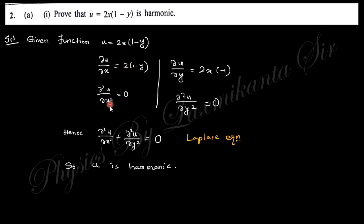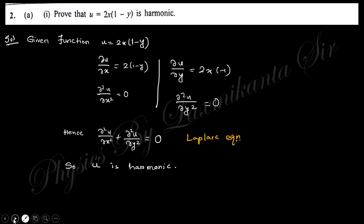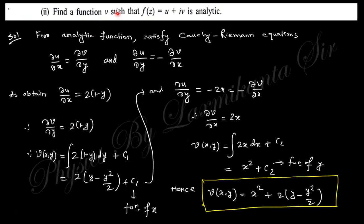Taking the second order partial derivative with respect to x, there is no x term remaining, so this gives 0. Similarly, the partial derivative with respect to y gives 2x·(−1), and the second order partial derivative with respect to y also gives 0. Their sum is 0, so the Laplace equation is satisfied — hence u is harmonic.